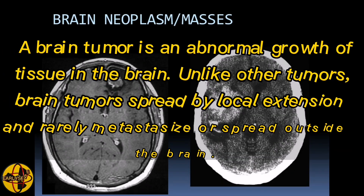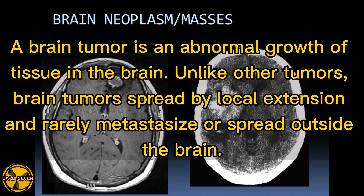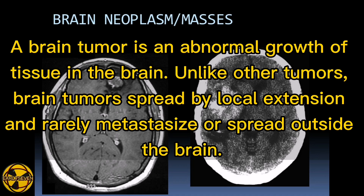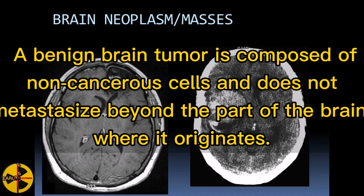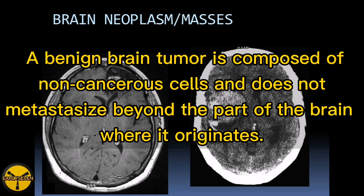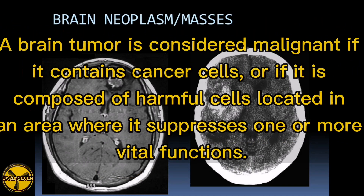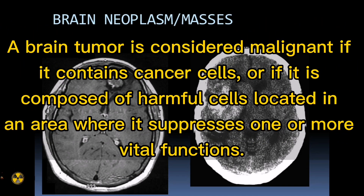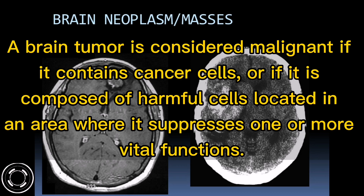A brain tumor is an abnormal growth of tissue in the brain. Unlike other tumors, brain tumors spread by local extension and rarely metastasize outside the brain. A benign brain tumor is composed of non-cancerous cells and does not metastasize beyond the part of the brain where it originates. A brain tumor is considered malignant if it contains cancer cells or is composed of harmful cells in an area where it suppresses one or more vital functions.